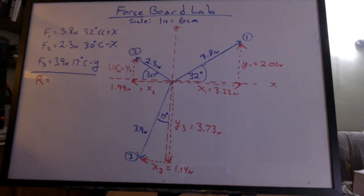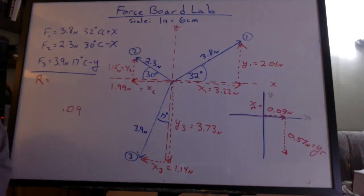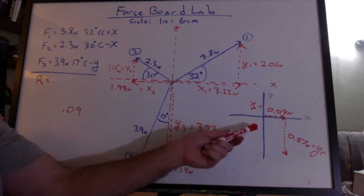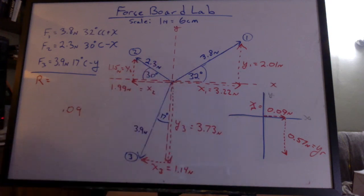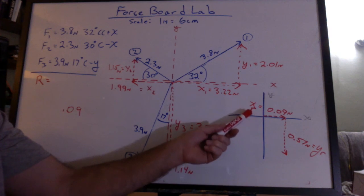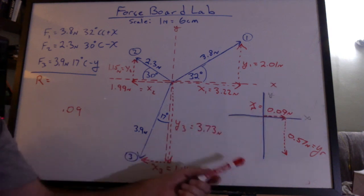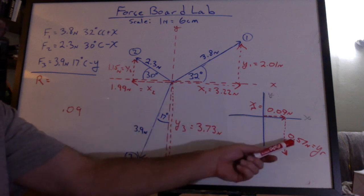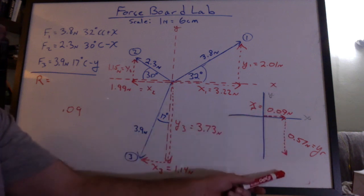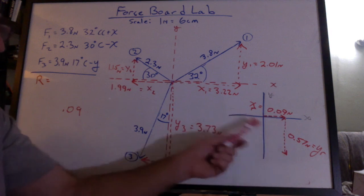Next step, add all the x's, add all the y's. Well, I'm going to show that over here because this diagram is going to get awful crowded. It turns out that the sum of the x's is 0.09 positive. That's to the right. The sum of the y's is negative 0.57 newtons. That's down. So these are the components of the resultant.